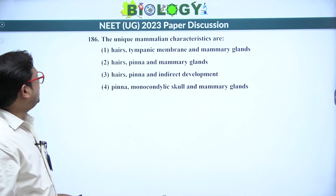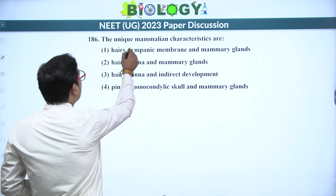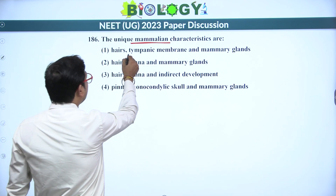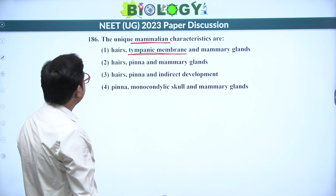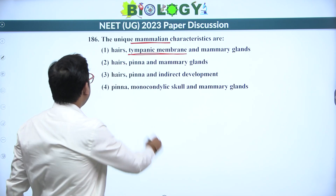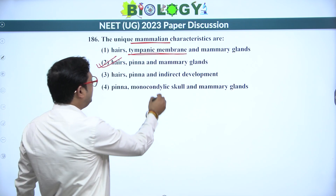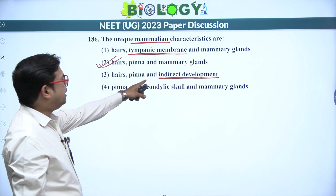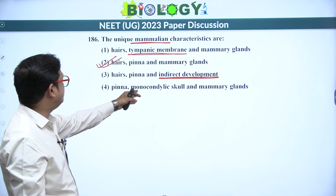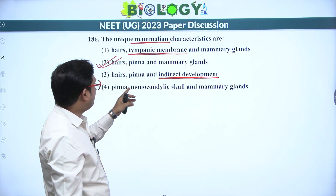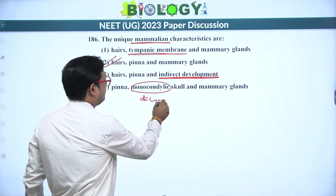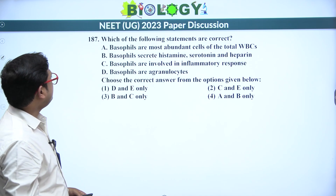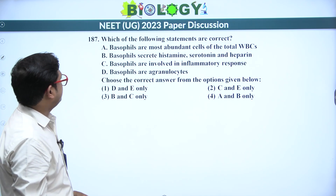Next: unique mammalian characteristics. Tympanic membrane is also present in amphibians. Pinna and mammary glands are unique to mammals. Indirect development is not applicable — mammals have direct development with no larval stages. Our skull is dicondylic. So the answer is the second option — pinna and mammary glands.